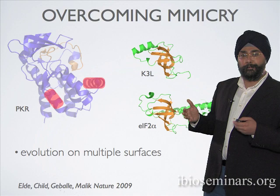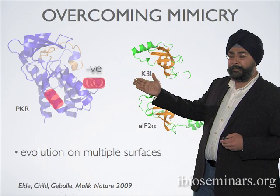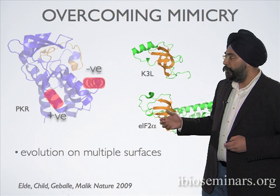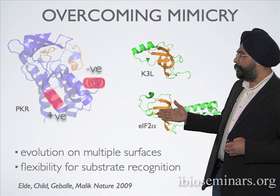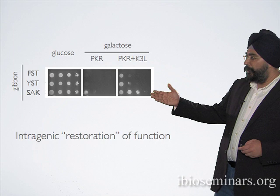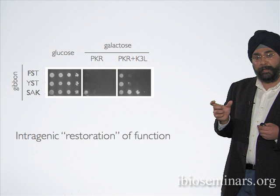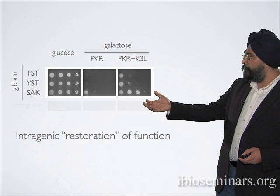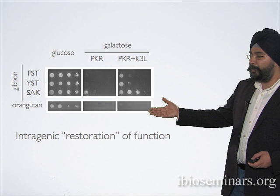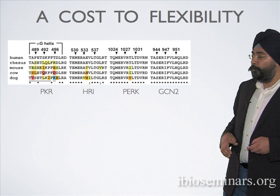What appears to be the first evolutionary step when PKR encounters mimicry is actually a negative affinity — where PKR loses affinity not just to EIF2-alpha but also to K3L — and then restores its affinity through interactions in another domain. This implies extraordinary flexibility for PKR to recognize a substrate that has undergone no changes over the course of evolution. For example, the orangutan G helix in a gibbon backbone is susceptible to mimicry and does not bind its substrate well, yet the orangutan backbone completely restores binding to EIF2-alpha and overcomes mimicry — meaning something else in the orangutan backbone was sufficient to restore the weakness of its G helix.